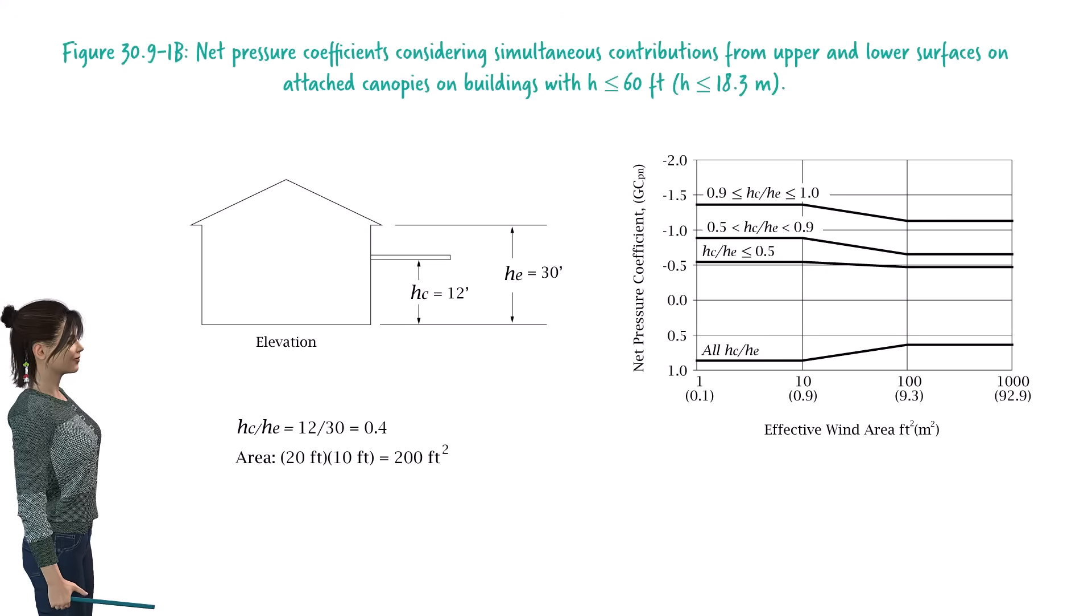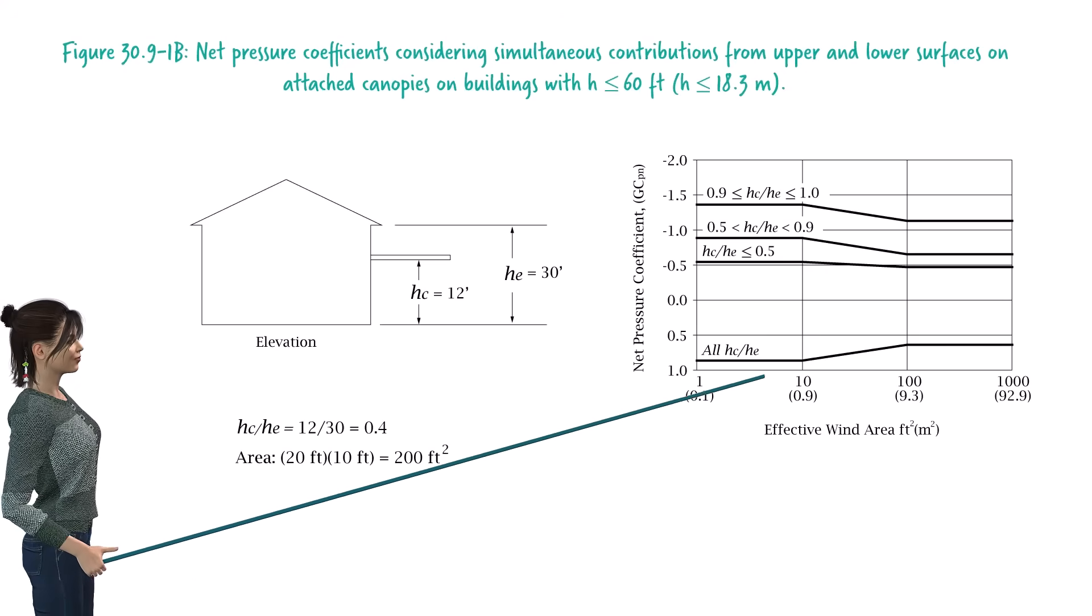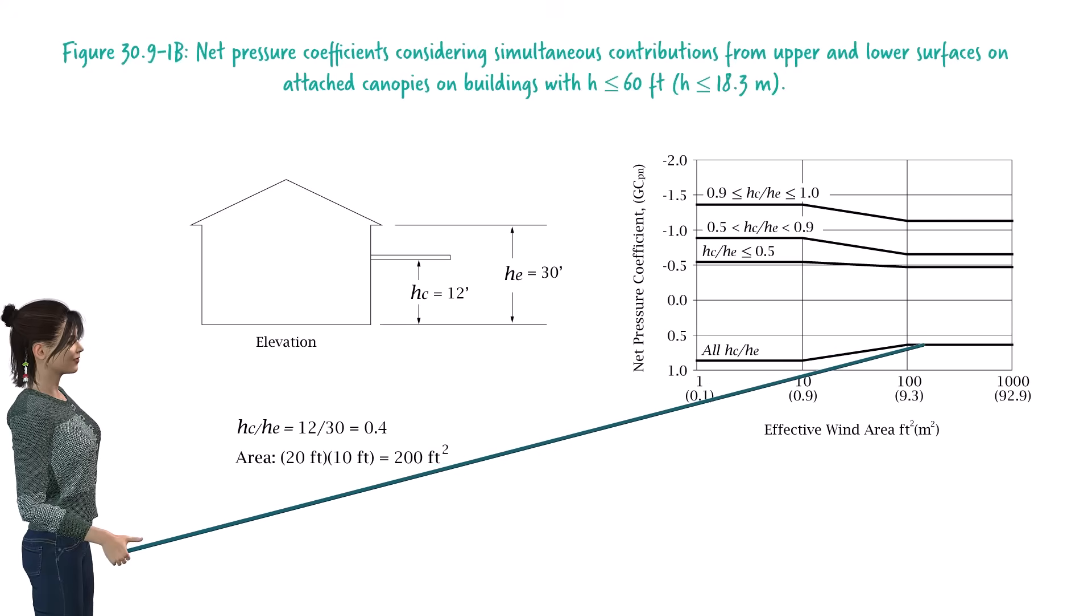To determine the positive coefficient, we use this line. For an area of 200 square feet, we get a positive coefficient of approximately 0.65.